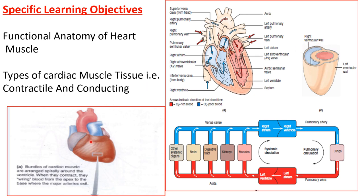Here we see the spiral arrangement of the fibers of the heart, arranged spirally around the ventricles. The cardiac muscle tissue has a contractile element — the muscles contract and pump blood into vessels — and a conducting element. Impulse arises in the SA node and is conducted through special muscle fibers in the heart called conducting tissue.